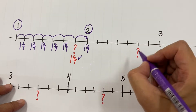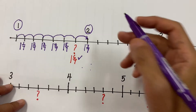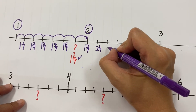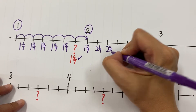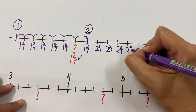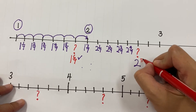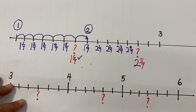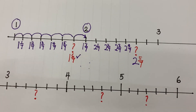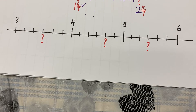After two whole, the markings continue: two whole one out of seven, two whole two out of seven, two whole three out of seven, two whole four out of seven — so the answer here will be two whole five out of seven.